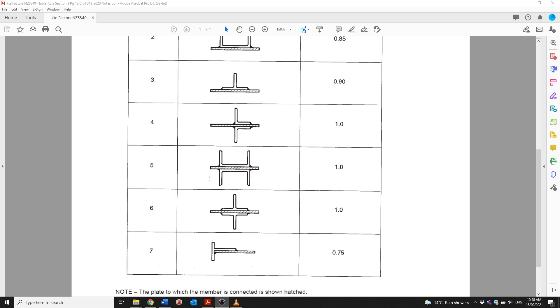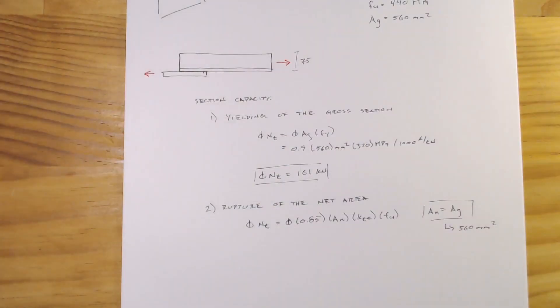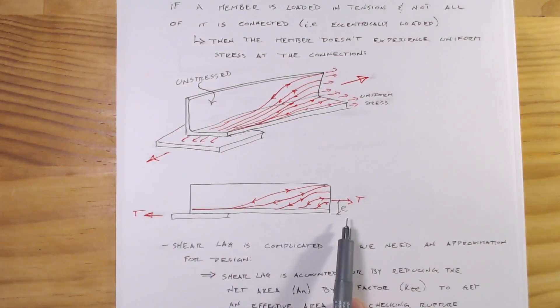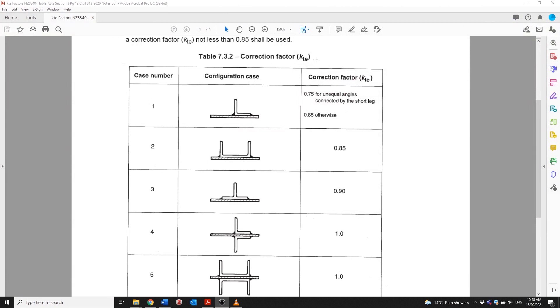That's because even though we have some shear lag we don't have any eccentricity there, and so because those forces are going to all line up at the centroid of the plate we can effectively account for those forces to be identical. As I said, this kte factor is a combination really of both the shear lag effect as well as this eccentricity.